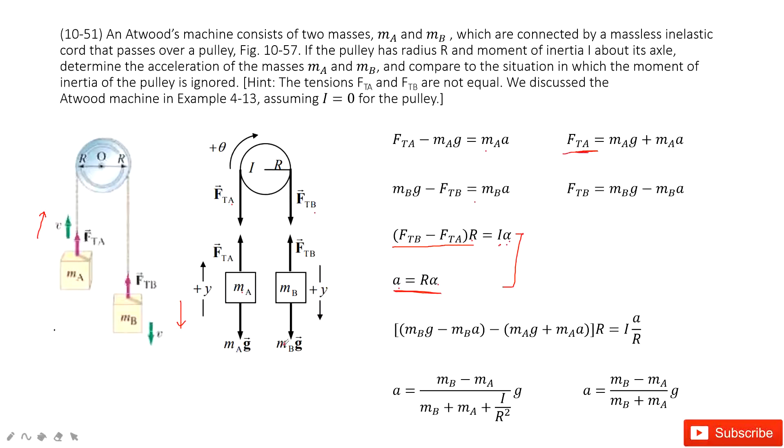And the second one, we have the gravity, MBg minus the tension, FTB equal to mass B times acceleration. In this one, we get FTB.